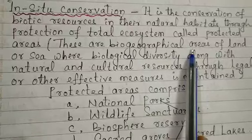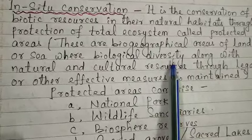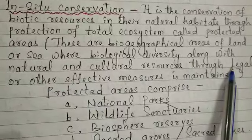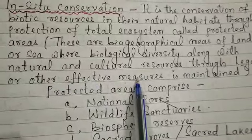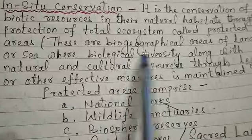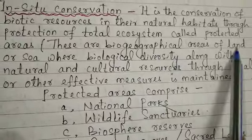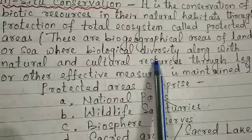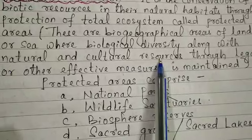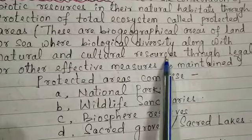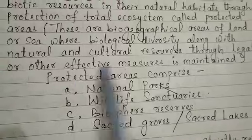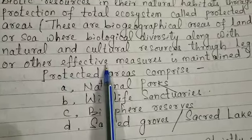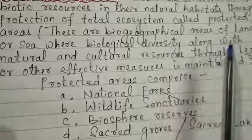These total ecosystems are called protected areas. Protected areas can be defined as bio-geographical areas of land or sea where biodiversity, along with the natural and cultural resources, is conserved through legal or other effective measures.